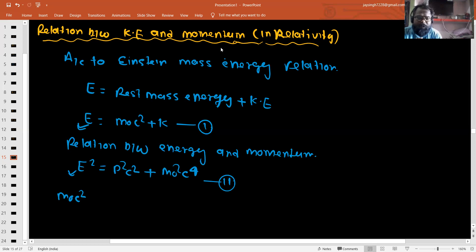E² equals P²c² plus m₀²c⁴. So m₀²c⁴ plus K whole square equals P²c² plus m₀²c⁴. This simplifies to m₀²c⁴ plus 2m₀Kc² equals P²c².